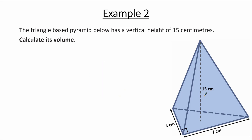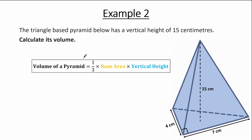In this example, we use the volume of a pyramid formula again: volume equals one-third multiplied by base area multiplied by vertical height. The vertical height is 15, as given in the question. The base area is the area of the triangle, which is actually a right-angle triangle. So the area of this triangle is one-half multiplied by its base, 7, multiplied by the height, 4. Substituting these values, the volume equals one-third multiplied by one-half multiplied by 7 multiplied by 4 multiplied by 15.